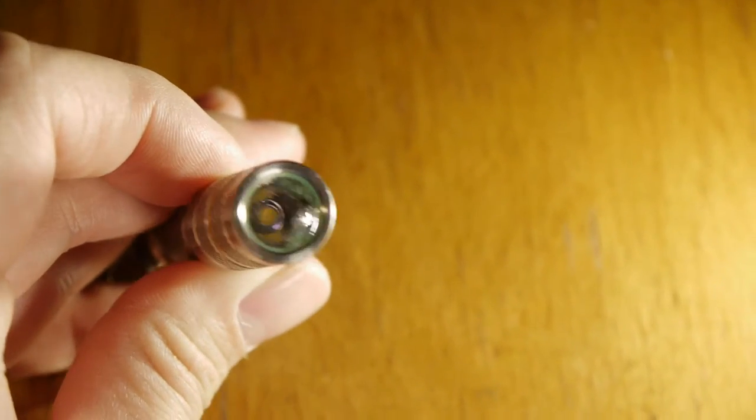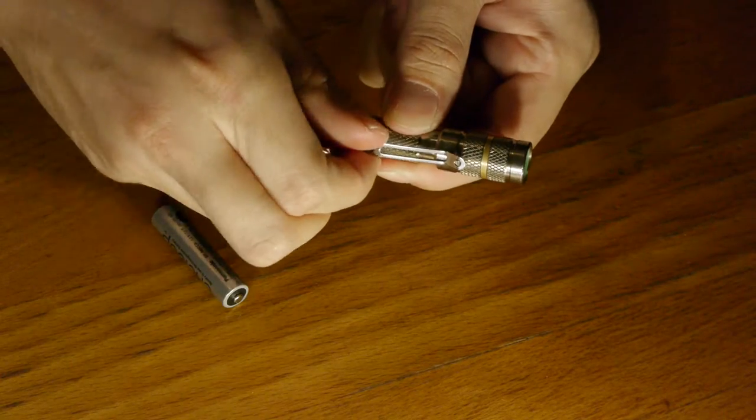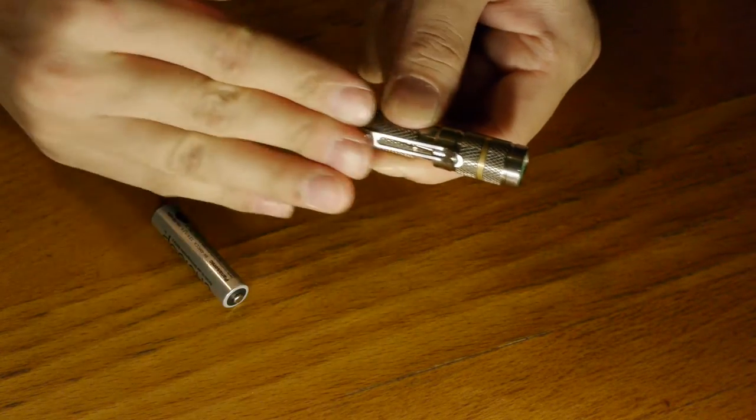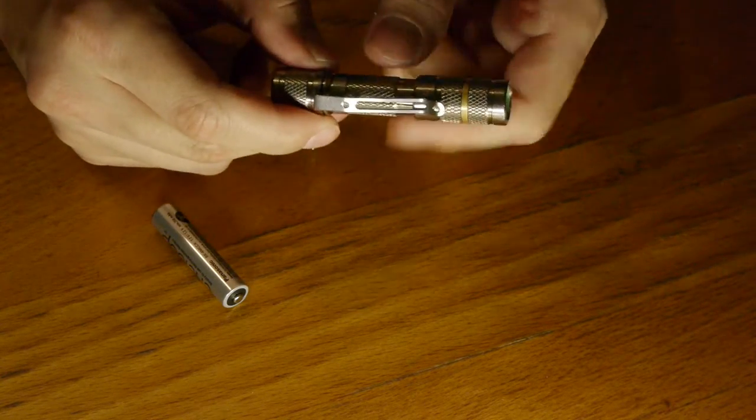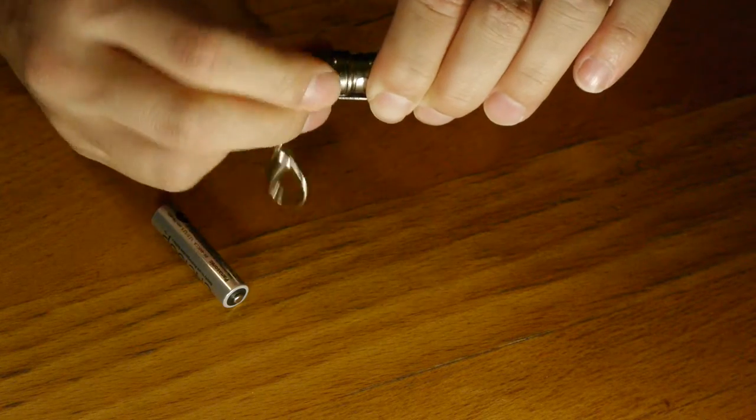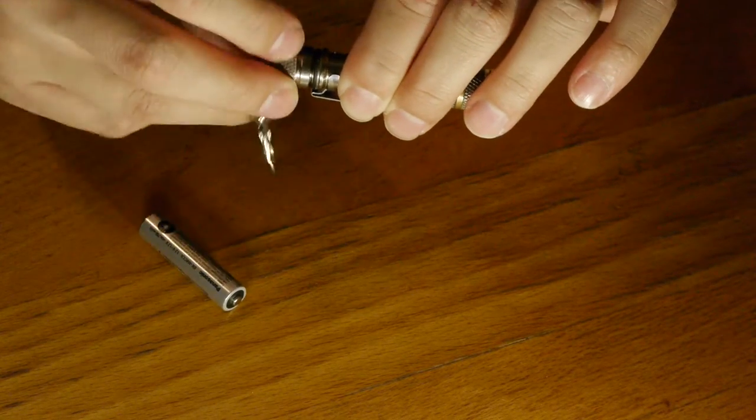It comes with an adjustable takeoff clip where you can reverse this clip here and have it face the other way. So if you want to put it on a hat, you can use it. What I like about this light is that the form factor is really small, so you won't notice the weight if you do that.